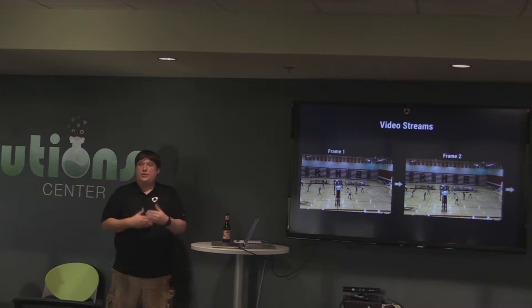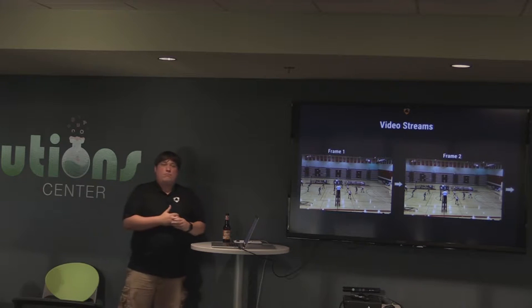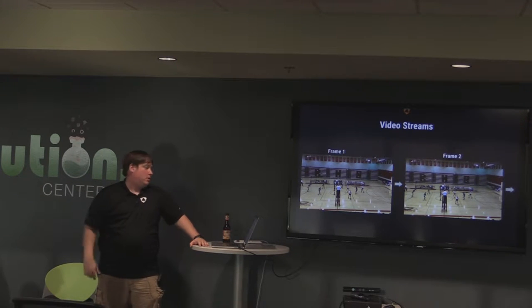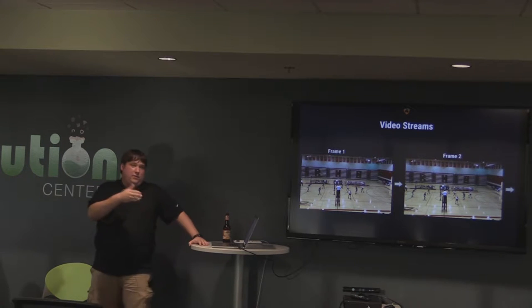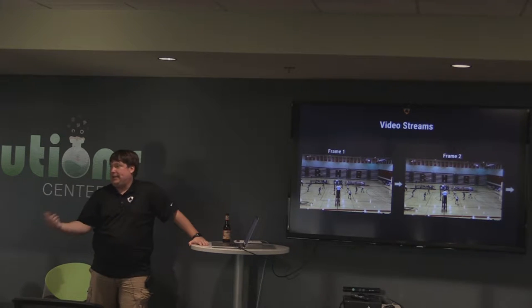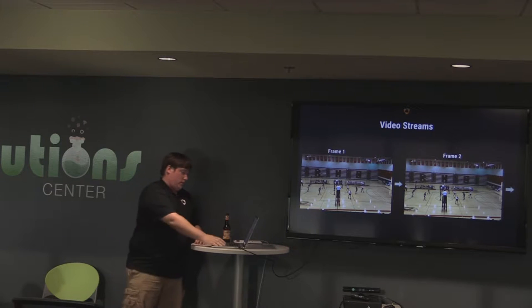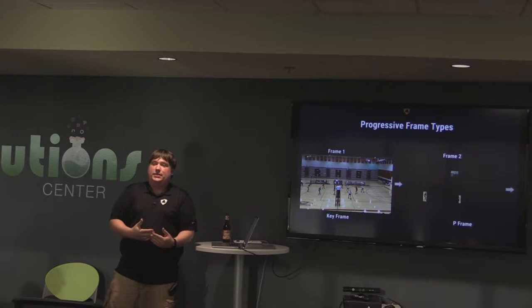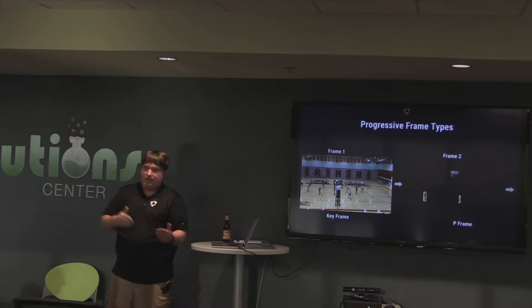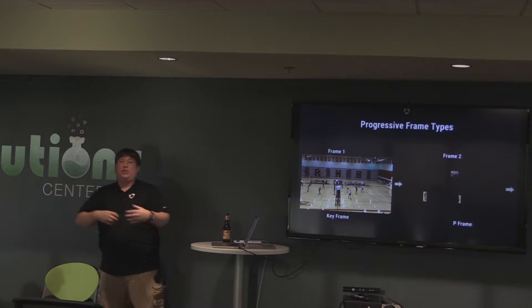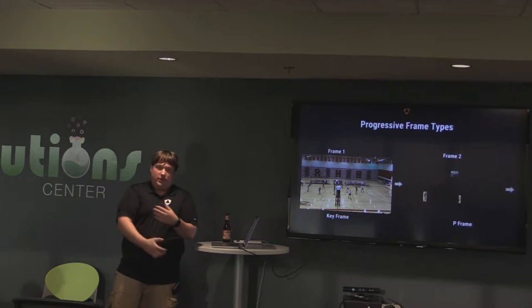These frames are going to be rendered to you — most video you watch today will be around 30 frames per second. It has to be at least 14 to 15 for you to detect motion; below that it gets choppy. Some higher quality streams will be about 60 frames per second, and slow motion cameras bump that up even further. With 30 frames per second and so much duplication between frames, video is obviously a great candidate for compression. The sequential frames beyond the first frame won't have full encodings of the entire picture — just what's changed.